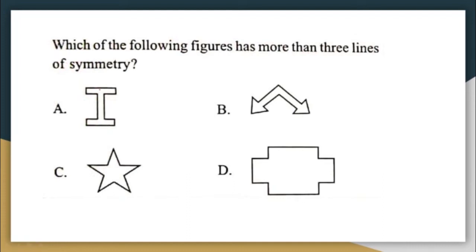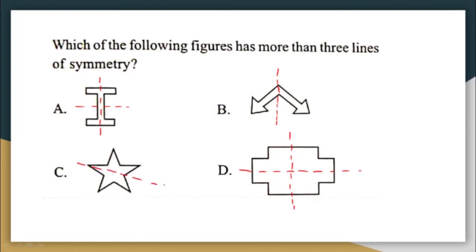Which of the following figures has more than three lines of symmetry? Looking at option A, we have only two lines of symmetry. Option B has only one line of symmetry. Option D also has only two lines of symmetry.